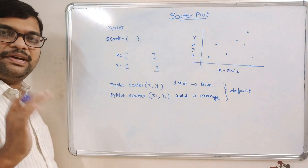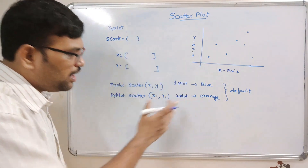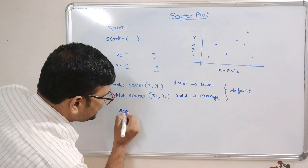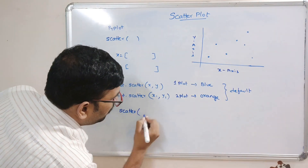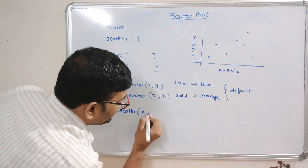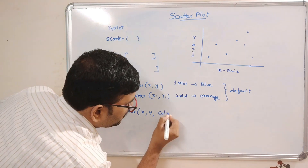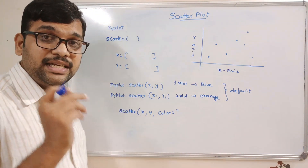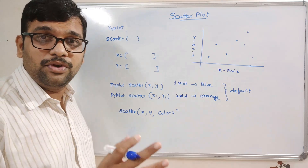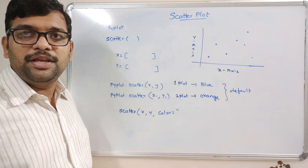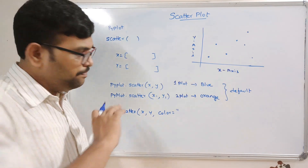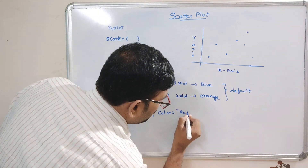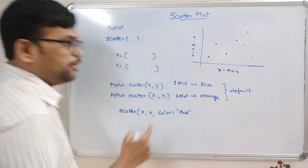If you want to specify the color, use the color attribute in the scatter function. You can represent the color as a single character, give the full name, or simply use the hexadecimal format. For example, I'll go with red so all the representation will be in red color.